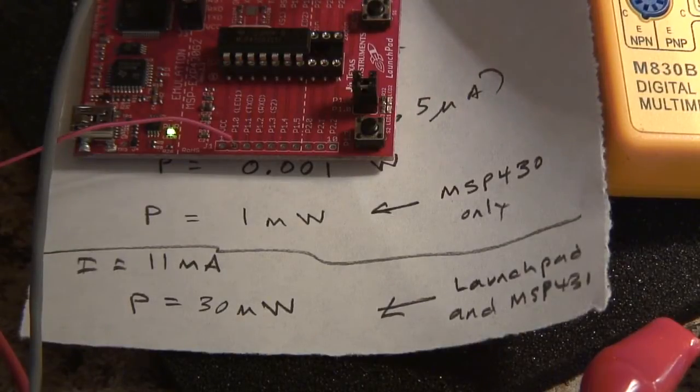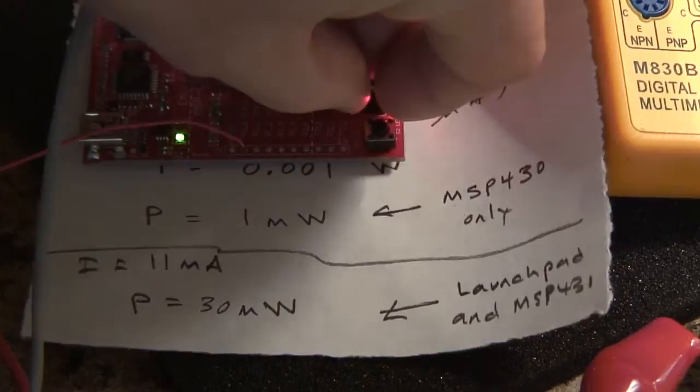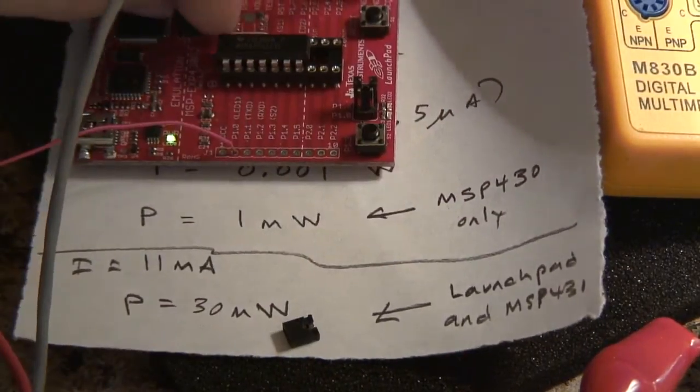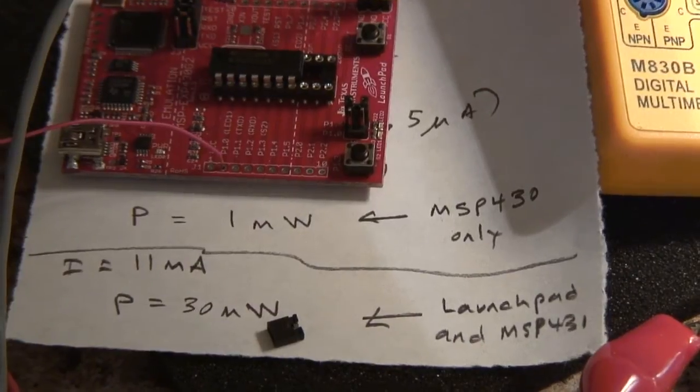To summarize this experiment, we find that when we have the pretty LEDs on the launch pad and the MSP430 is busy working, the power consumption in my setup is about 30 milliwatts. If you're okay with disabling the LEDs, with the onboard LEDs disabled, you bring your consumption down to a milliwatt.